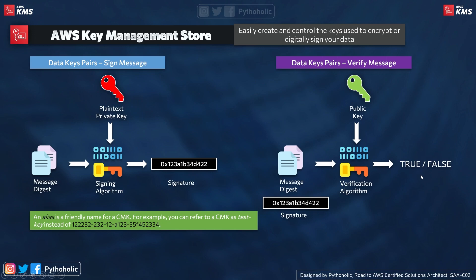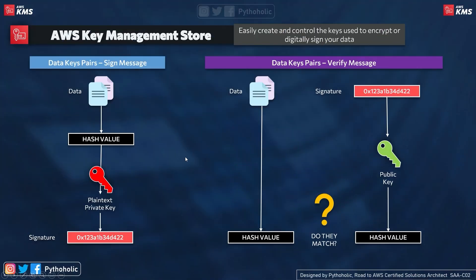When we talk about aliases, rather than using the long multi-digit number with hyphens, you can provide a name of your choice and use it as your alias for your CMK. That's very convenient — you can put a name there and use it.